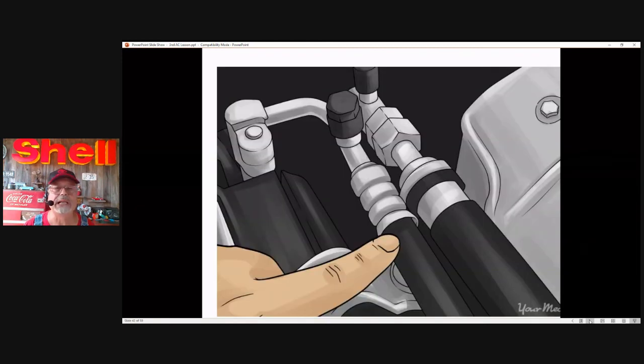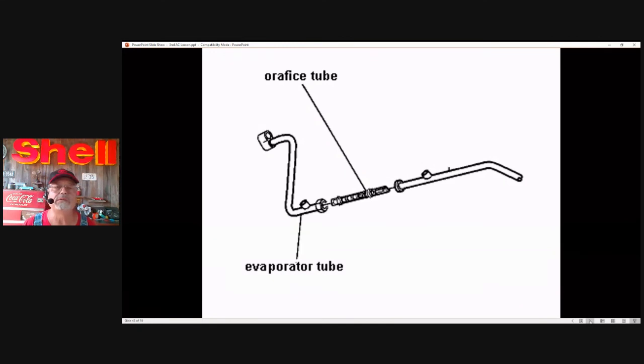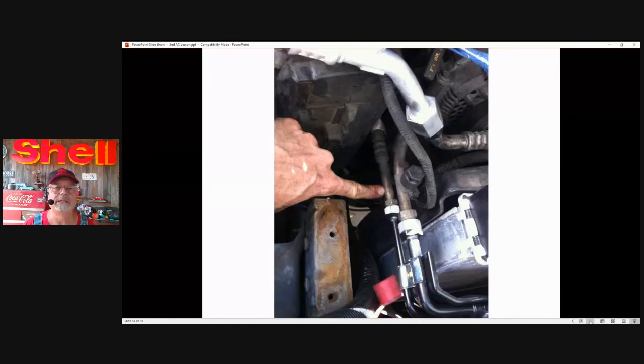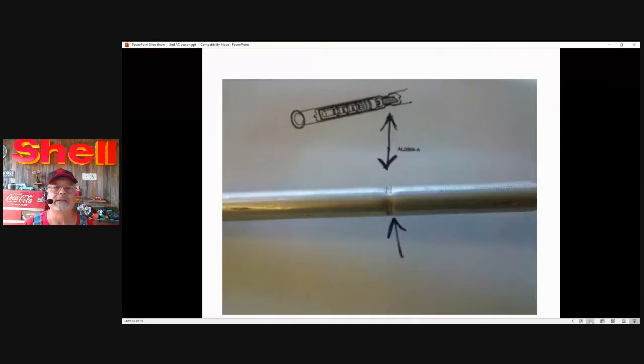A good place to find the liquid line is going to be next to the suction. Over here at the firewall, this is the liquid line. Here's an example of how the orifice tube can be located in the middle of the liquid line. Here, in this case, it's located at the end of the liquid line. These little dimples or crimps are indicators that that's where the tube is located. That's how you're going to start looking for this.